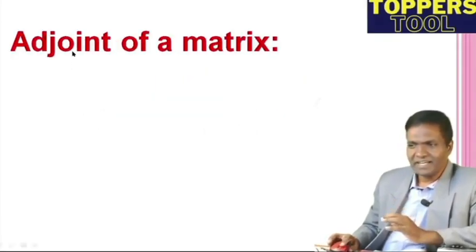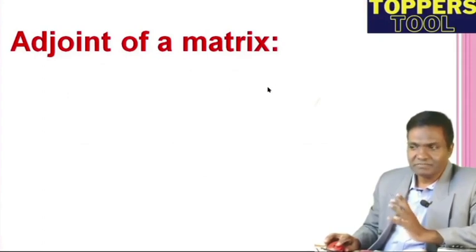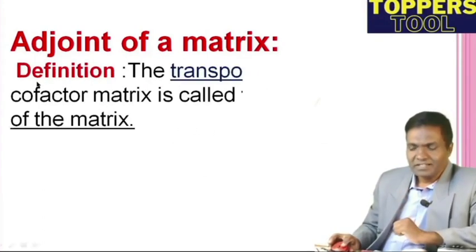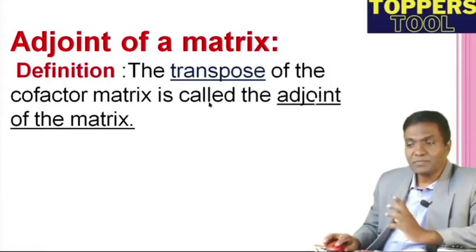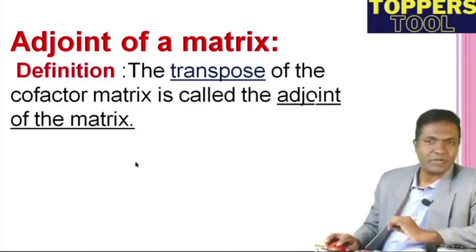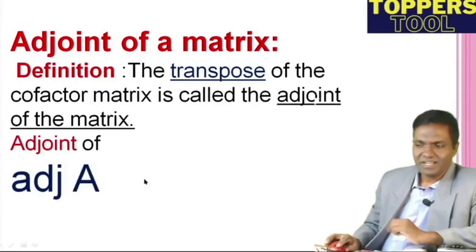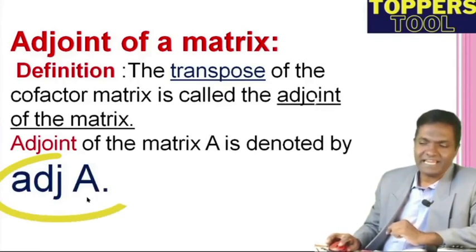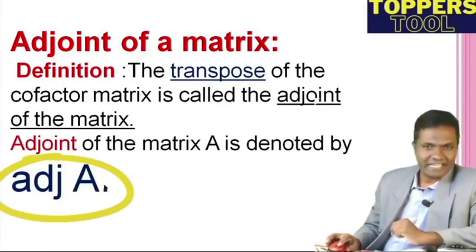Adjoint of a matrix is defined as: the transpose of the cofactor matrix is called the adjoint of the matrix, and it is denoted by adj(A).